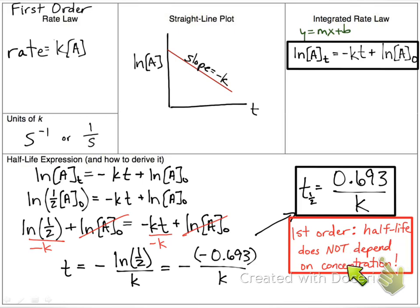That means if you have one molar of the substance, it takes the same amount of time to cut to 0.5 molar as it does to cut from 0.5 molar to 0.25 molar. So look for that pattern.